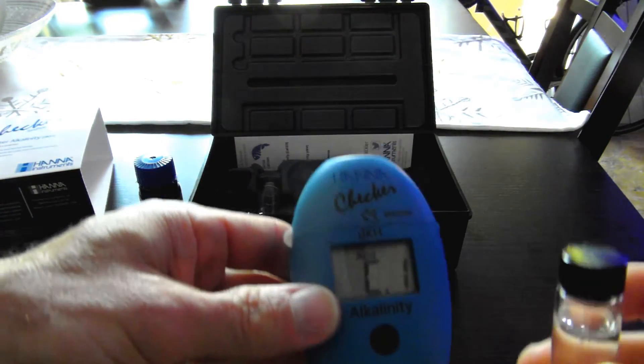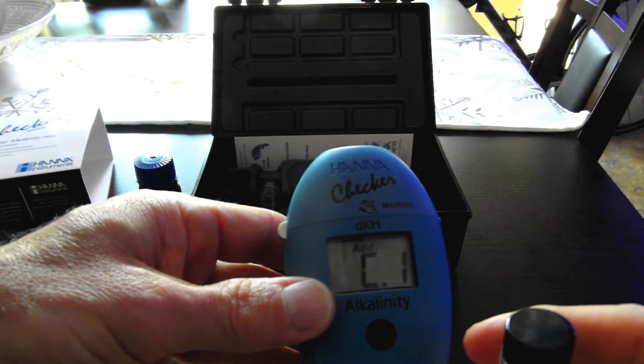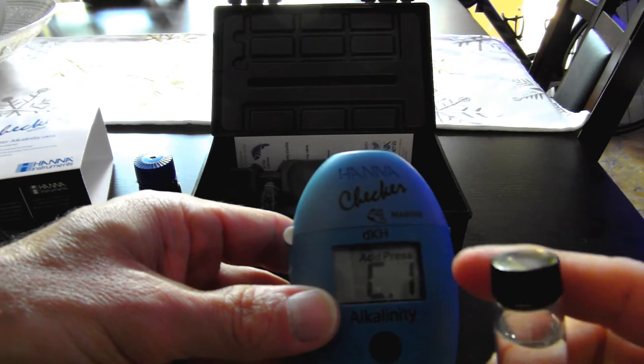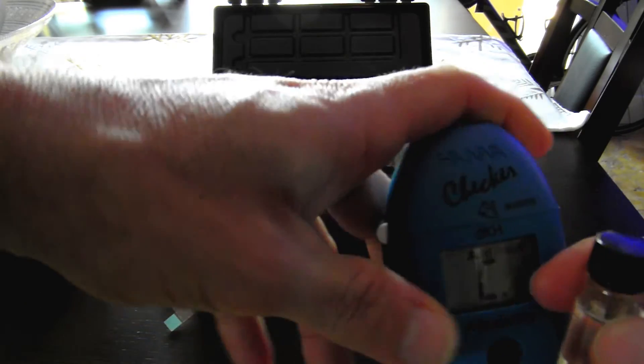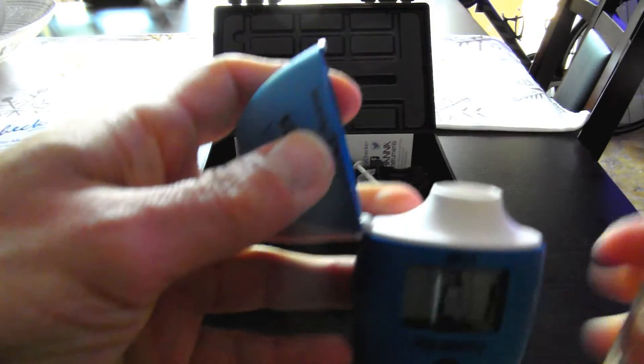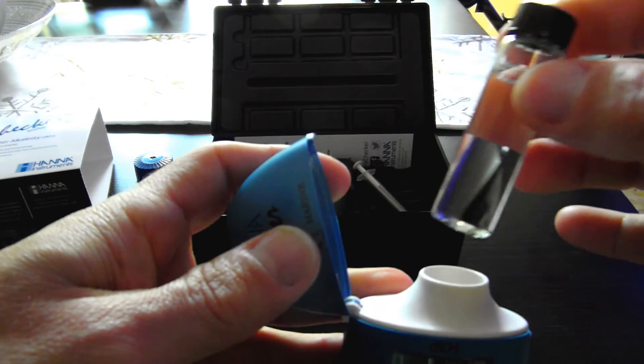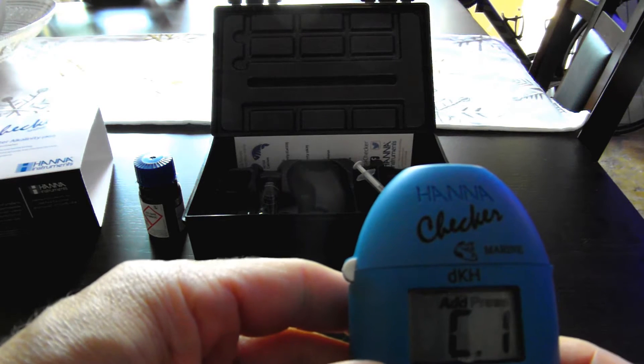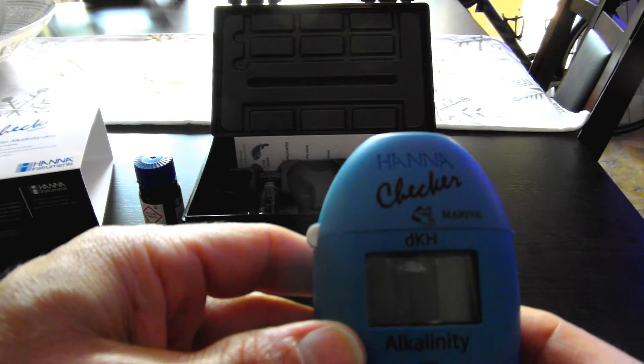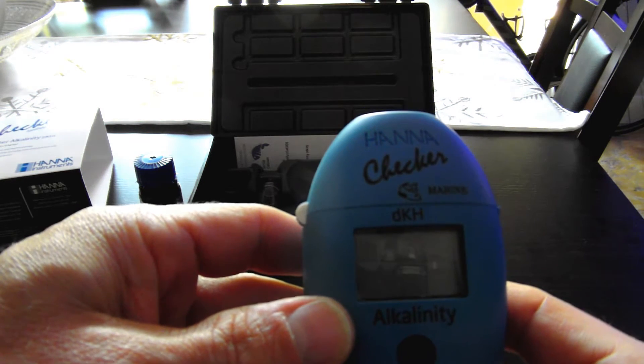And then with the Hanna Checker on and showing cuvette 1 or C1 with the press word flashing, I'm going to open up the lid. I've dried the bottle off, I'm going to place it inside, and then I'm going to close the cap, let it snap, and press the button.